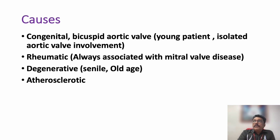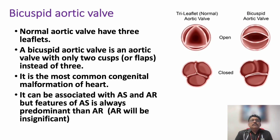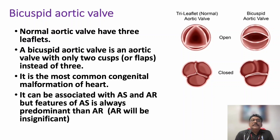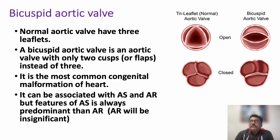So the common causes are: bicuspid aortic valve in younger individuals with isolated AS; rheumatic heart disease when other valves are involved; and atherosclerotic or degenerative disease in elderly individuals. Bicuspid aortic valve is also the most common congenital heart disease. Most patients may have no symptoms, but rarely it can develop into aortic stenosis or aortic regurgitation. In rheumatic heart disease, the mitral valve is also mostly involved.